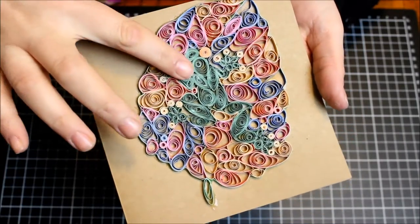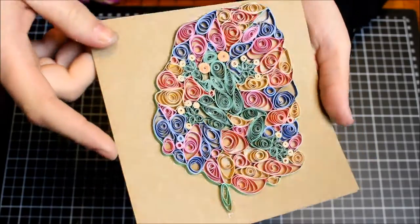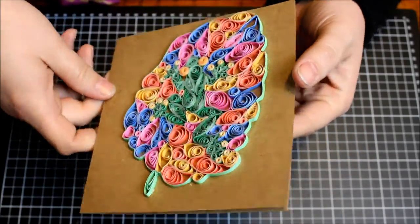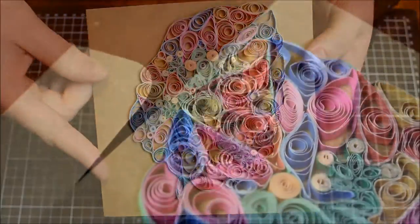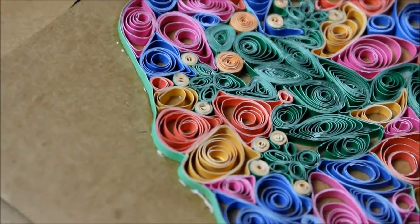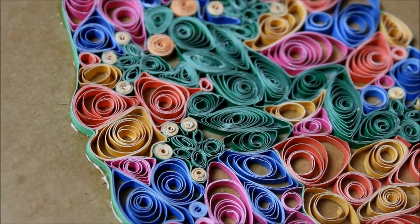And there you have it. A really cool beautiful quilled card with a little froggy in the middle that's really colorful and eye-catching. You can add a little sentiment on the front or do whatever you like with your card to customize it to what you want it to be.